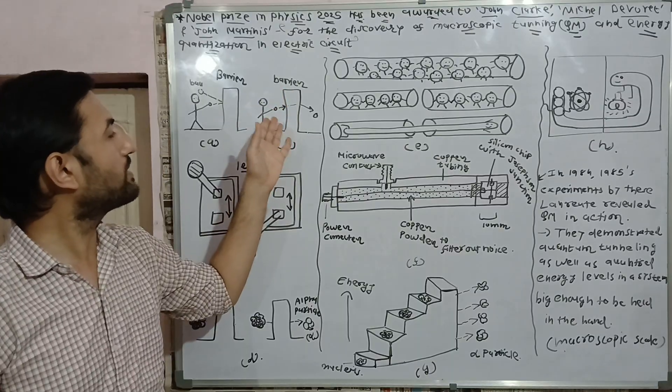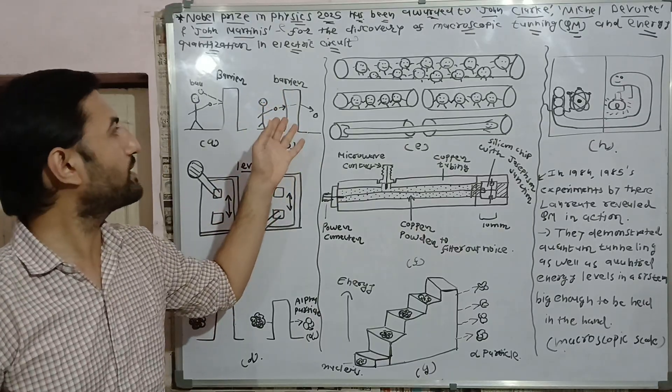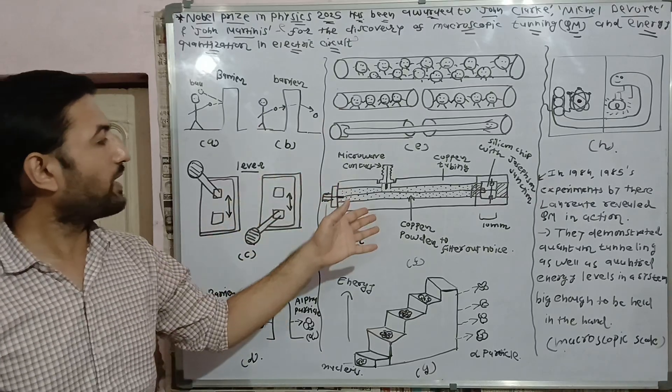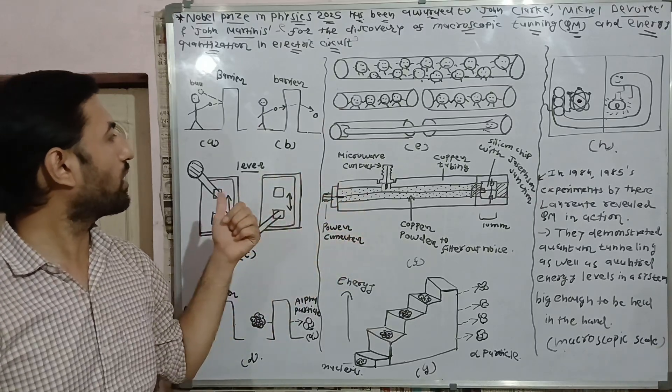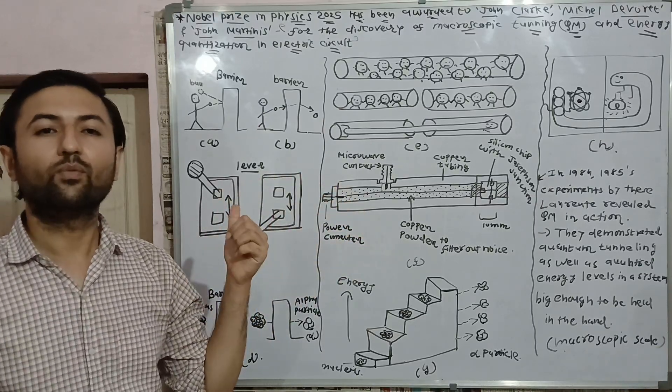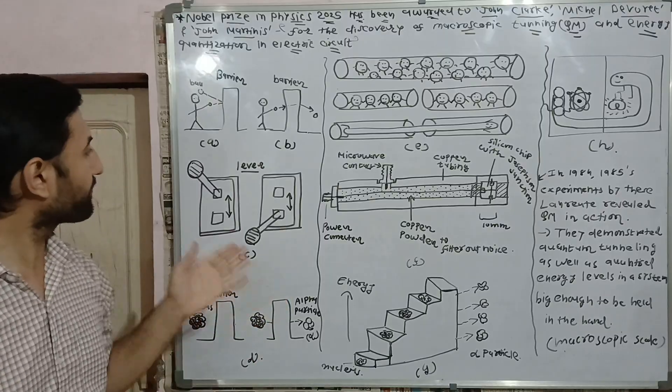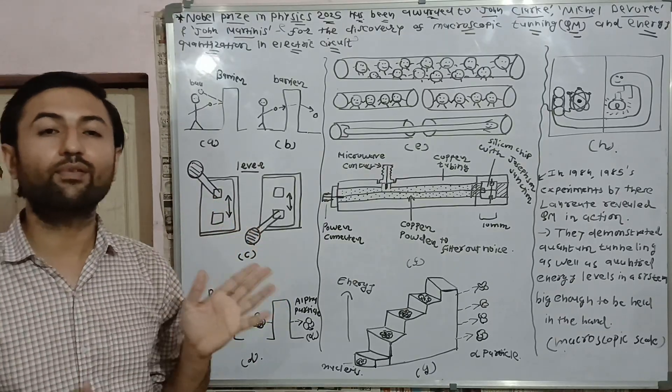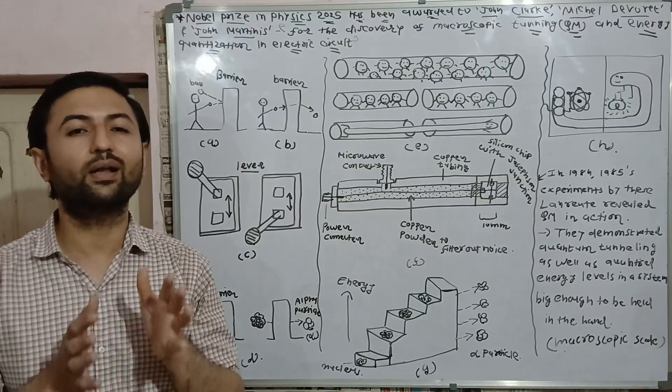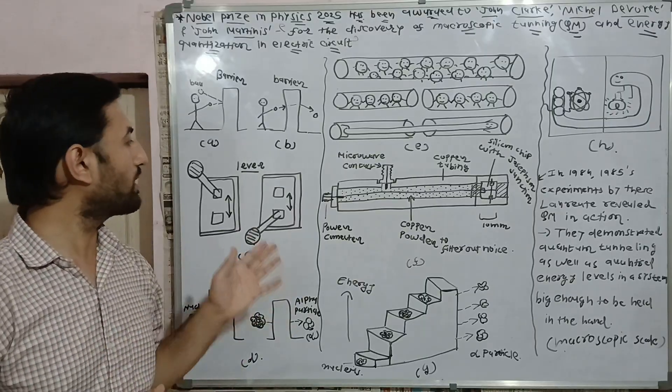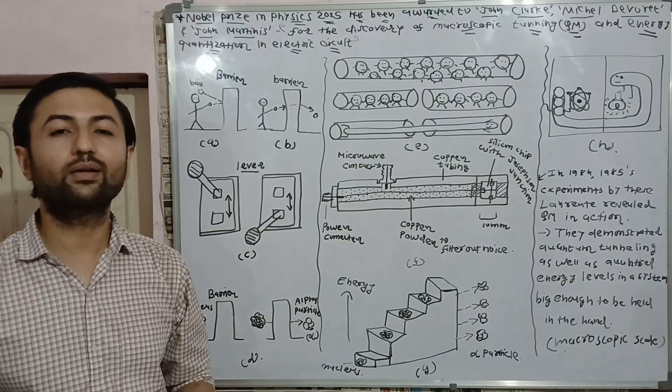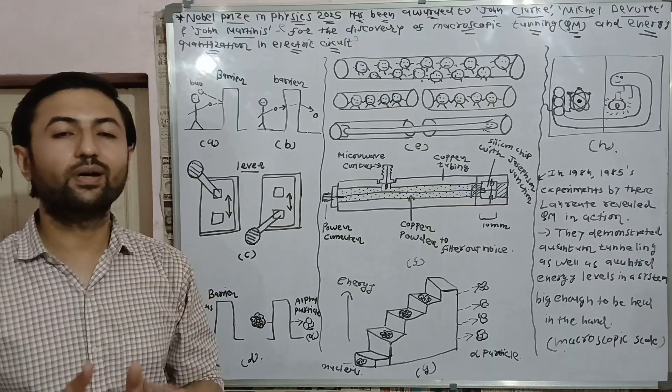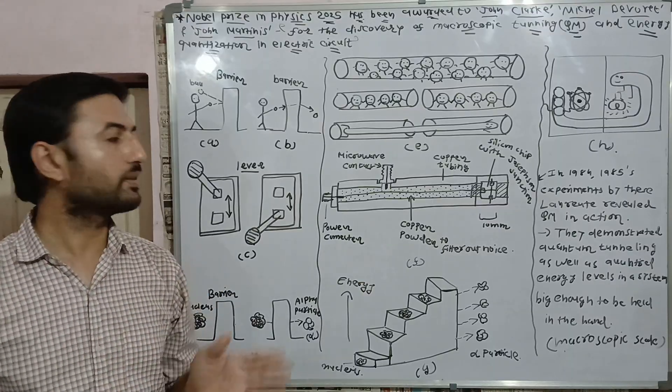But if you consider quantum mechanical effect, this ball will penetrate the barrier, which is in this case the wall, and reaches the second side. In this experiment, initially zero voltage step was considered, so this lever is in off condition as we haven't considered quantum mechanical effect.